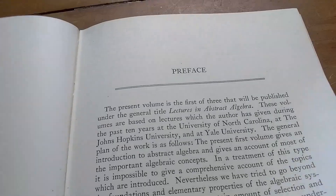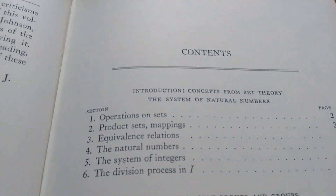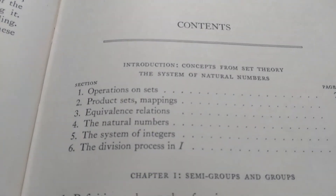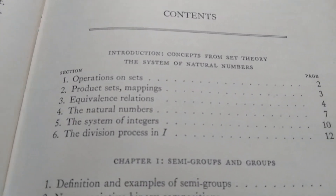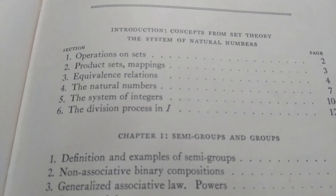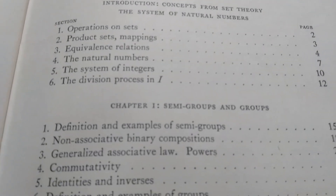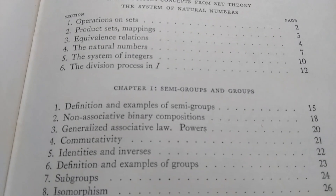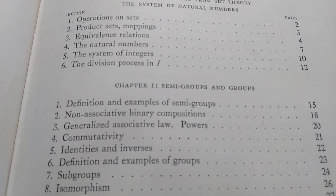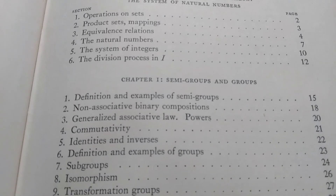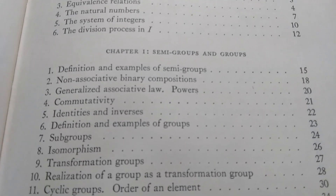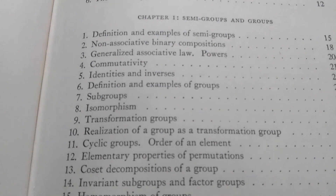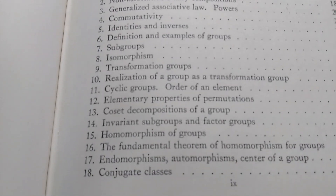Here's the preface, and then here is the table of contents. It starts off with operations on sets, then product sets and mappings, jumps right into equivalence relations, and the natural numbers and division. Then he goes on to semigroups and groups, which is nice. A lot of textbooks don't discuss semigroups at all, especially abstract algebra books, so that's kind of cool. And already on page 26 he's talking about isomorphism — really, really quickly. It moves through the theory quite quickly.